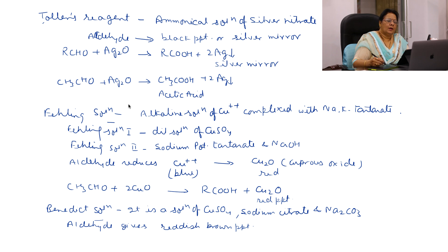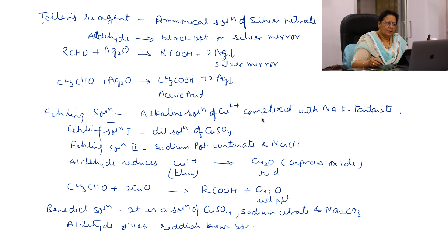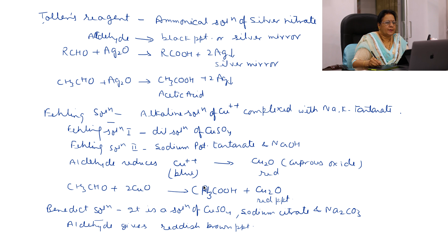Fehling's solution is an alkaline solution of cupric ions complexed with sodium-potassium tartrate. There are two separate Fehling's solutions: Fehling's solution A is a dilute solution of copper sulfate, and Fehling's solution B is sodium-potassium tartrate and NaOH. Aldehyde reduces cupric ions present in Fehling's solution to cuprous ions, which are red in color. Acetaldehyde is oxidized to acetic acid, and cupric oxide is reduced to cuprous oxide. Cupric oxide is blue in color while cuprous oxide is red in color.